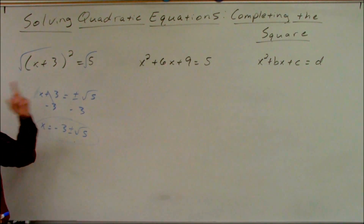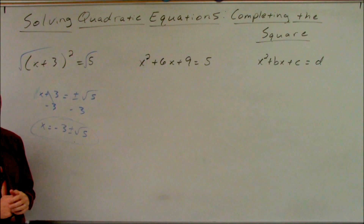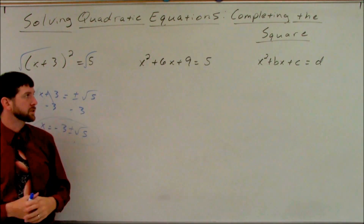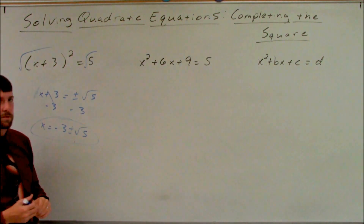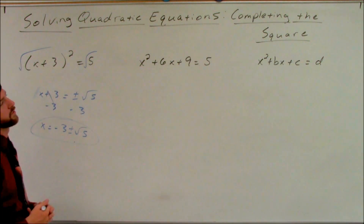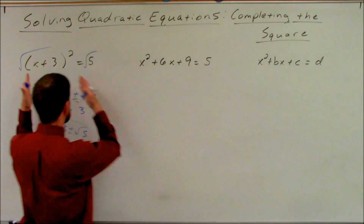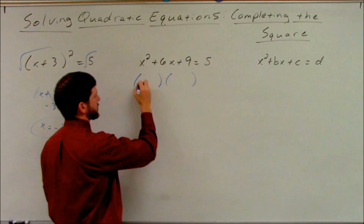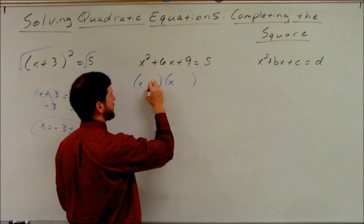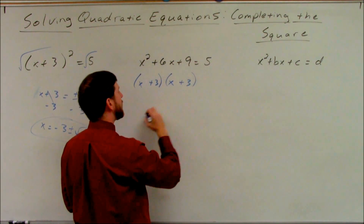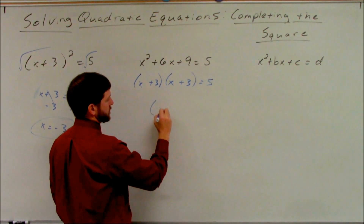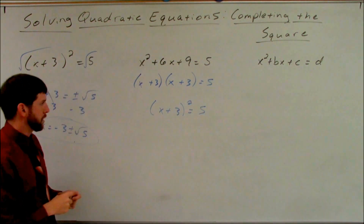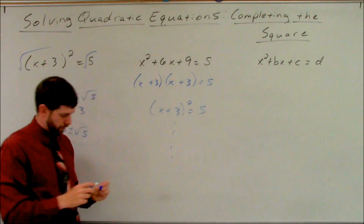So if we can get a quadratic into this form, it should be easy to solve. If we had a quadratic such as x squared plus 6x plus 9 equals 5, if I try to factor it — because that's what this looks like, factored form — x squared is x times x, 9 is 3 times 3. We can see we actually have x plus 3 quantity squared equals 5, and you just go on through and solve.